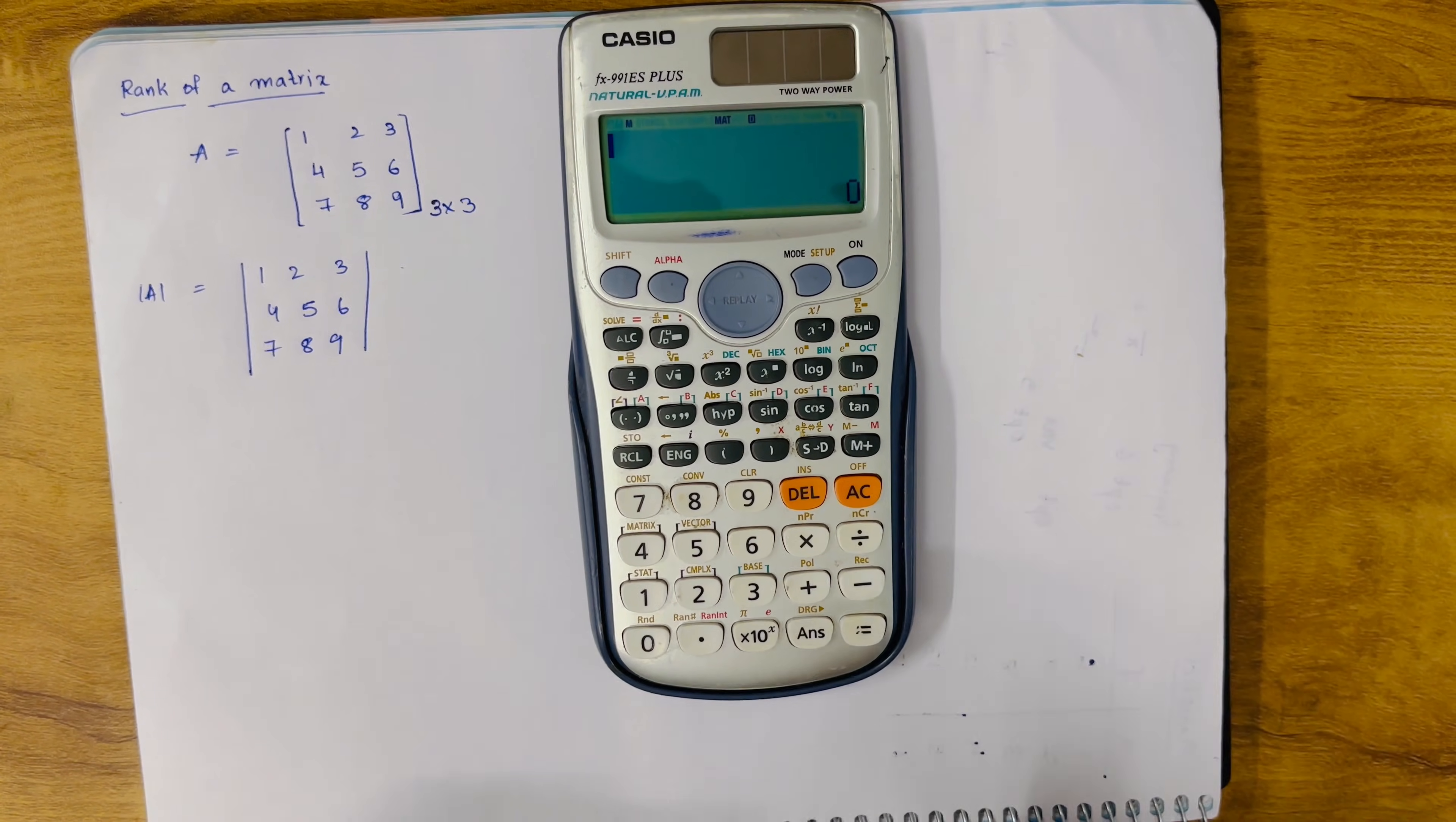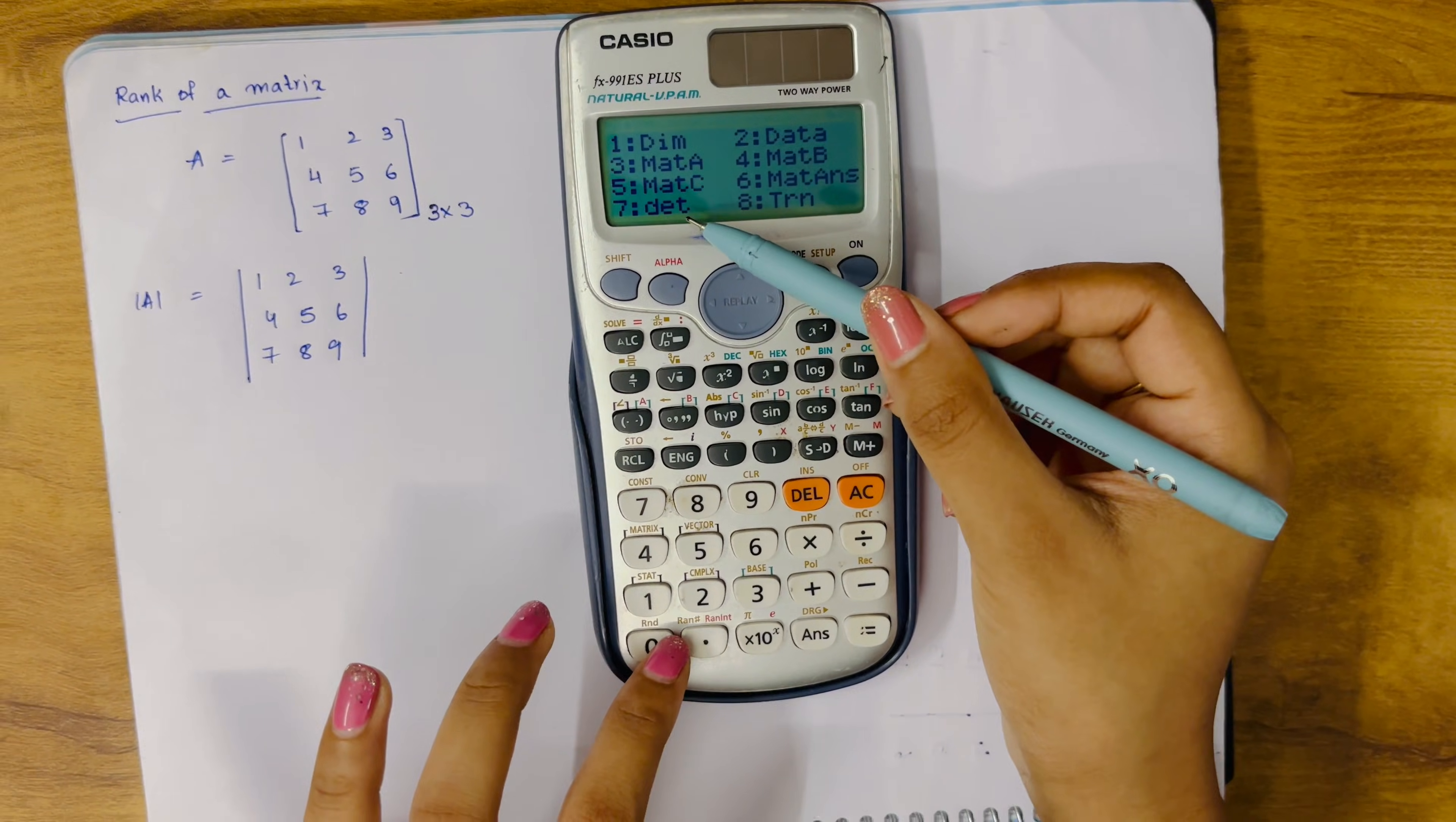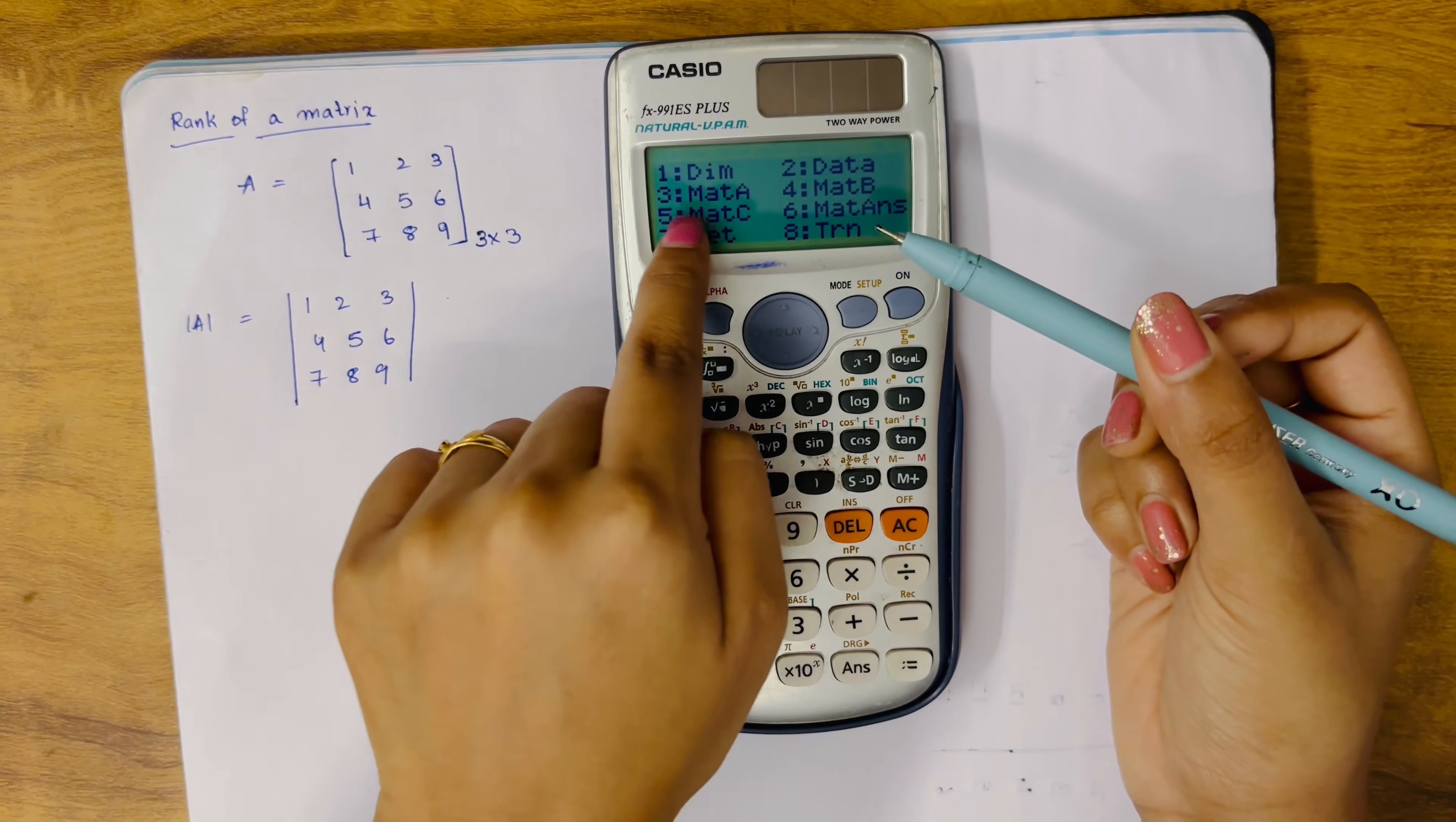Now we are storing the matrix. We need to find the determinant of this. How will we do it? Shift, and 4. Option 4 is matrix. You see this option 7, that is det. Click on it. Now again go to shift matrix option 3.